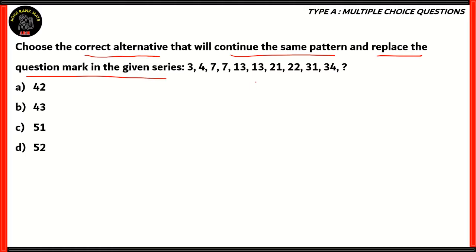Naturally, when tackling a number series question, the first thing people do is find out the differences. But if you notice, you have a difference of 1, then 3, then no difference at all, then a difference of 6, no difference at all, then 8, no difference, then a 1, then a 9, then a 3. As you can see, the series as itself does not make any sense, because the differences turn out to be various random numbers. So that approach does not work.